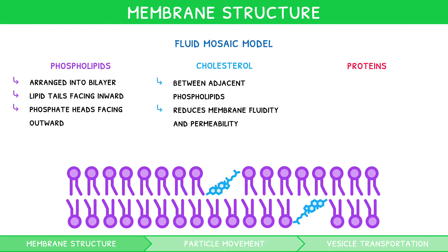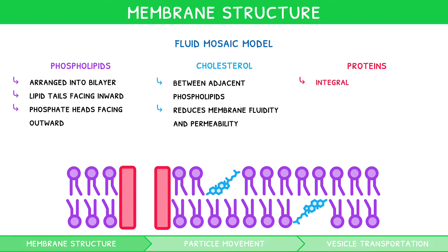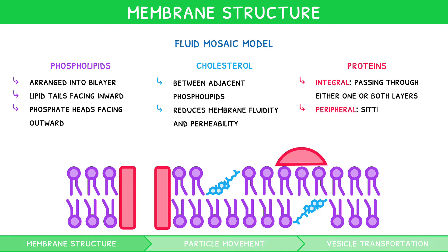Interdispersed between the phospholipids are proteins. These can be integral, passing through either one or both layers, or peripheral, sitting on the outside of the phosphate heads. Some integral proteins act as channels to allow particles to pass in and out, whilst some peripheral proteins form glycoproteins by attaching to carbohydrate chains.